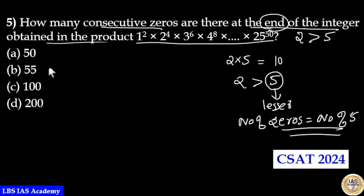Here the expression has base numbers 1, 2, 3, 4 up to 25. So multiples of 5 in base numbers are 5, 10, 15, 20 and 25. This is up to 25.